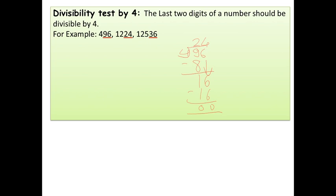So, 496 is also divisible by 4. Now, the next example is 1224. Here, the last two digits is 24. 24 is divisible by 4. So, 1224 is also divisible by 4. Now, the next example is 12,536. Here, the last digits are 36. 36 is divisible by 4. So, the number is also divisible by 4.